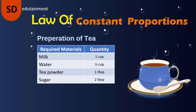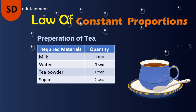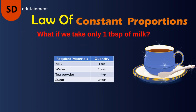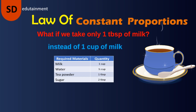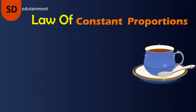By taking the required materials in the fixed ratio as mentioned, we can prepare a tasty tea. Instead, if you take some other quantity, you will end up making a 'sweet poison.' For example, if we take just one tablespoon of milk instead of one cup of milk, we get a decoction instead of tea. Let us now correlate this tea preparation concept with chemistry.